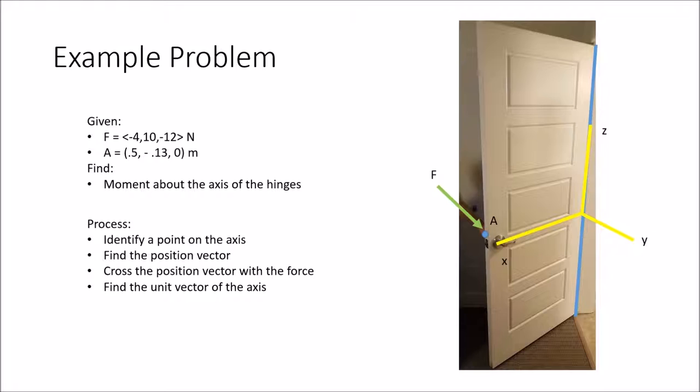Then I'll have to find the unit vector of the axis that I want to project the moment onto. And finally all we have to do is take the dot product of the moment and that unit vector.